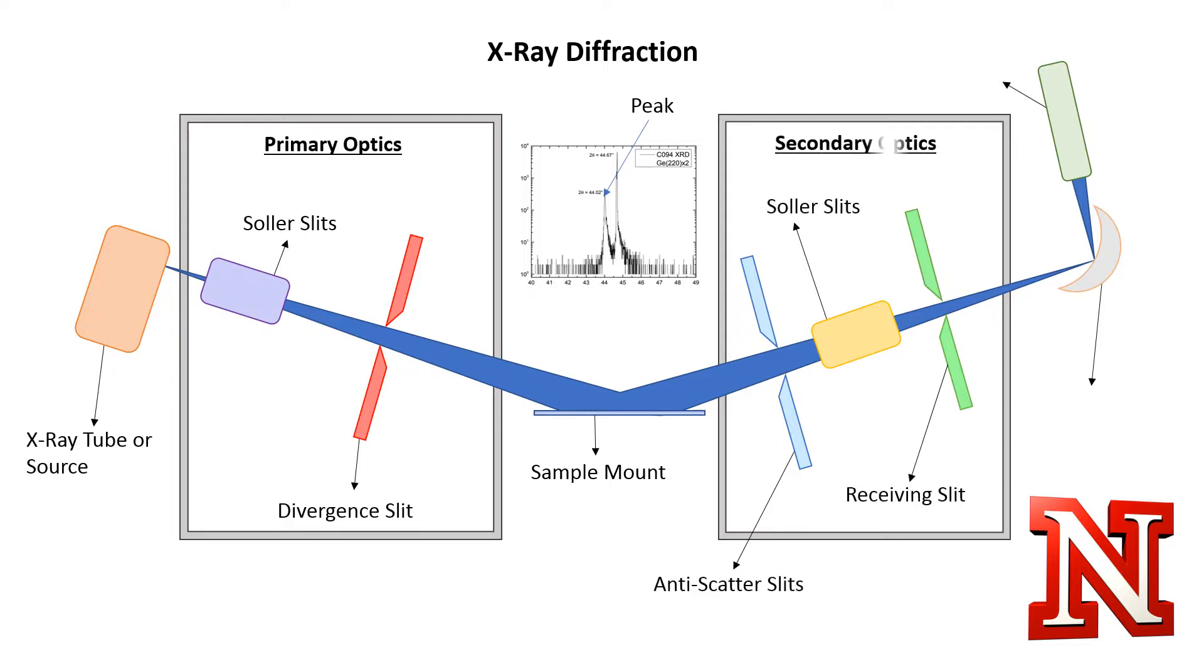Secondary optics receive deflected rays. Monochromators filter out unwanted x-rays. The detector converts x-rays to visible light, which is called scintillation. X-rays contact a compound that absorbs x-rays and emits visible light, then produces proportional electrical voltage.